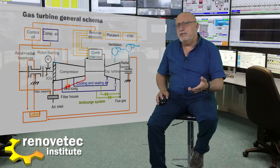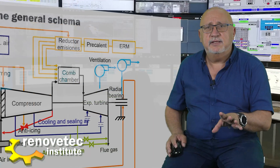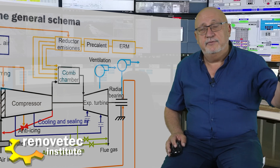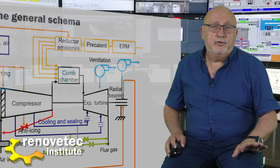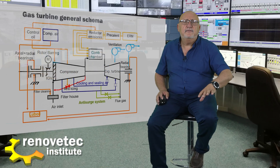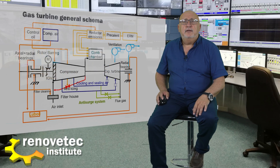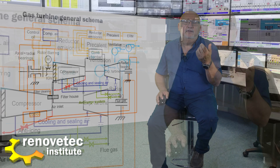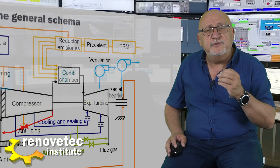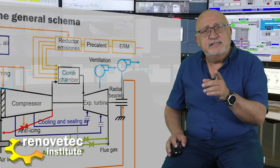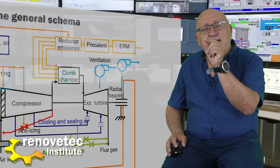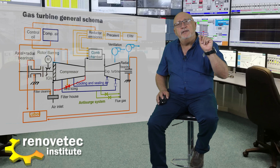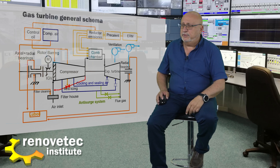The last element is the anti-icing system. Sometimes when the ambient air is very cold — less than five degrees — the water contained in the air can freeze at the first compressor stage. To avoid this, there is a system that routes a small part of the hot air from the outlet of the compressor back to the inlet of the compressor.